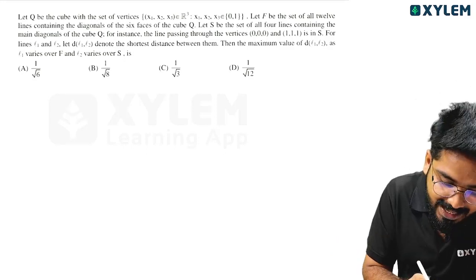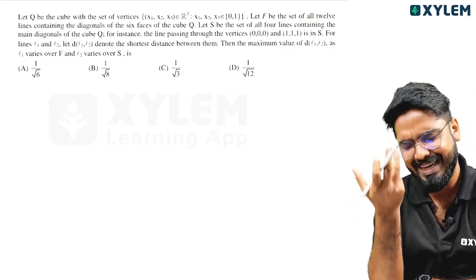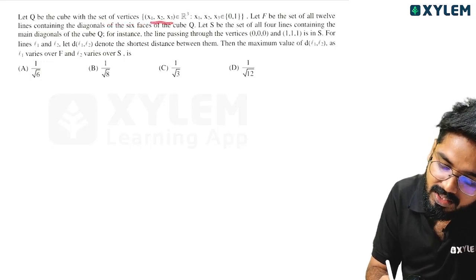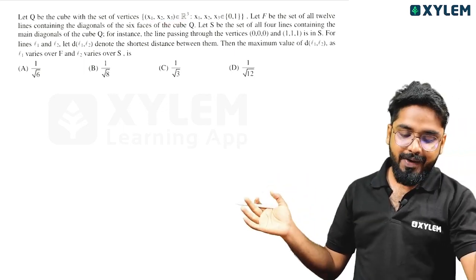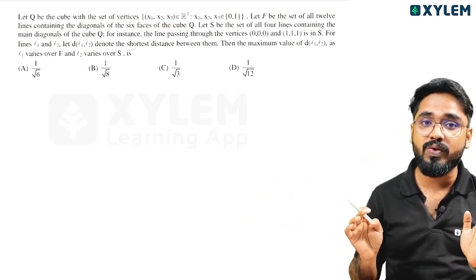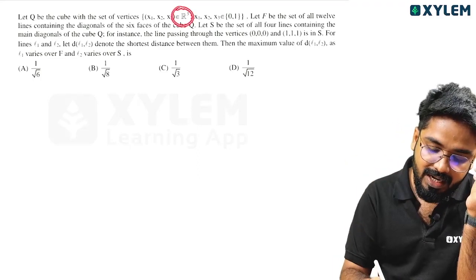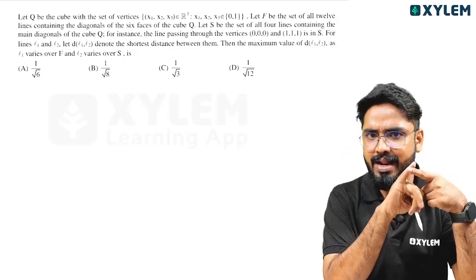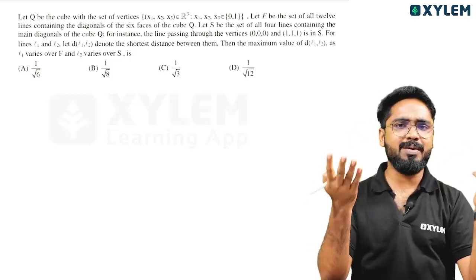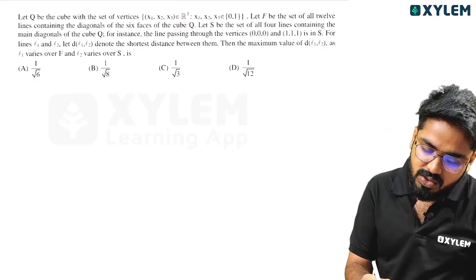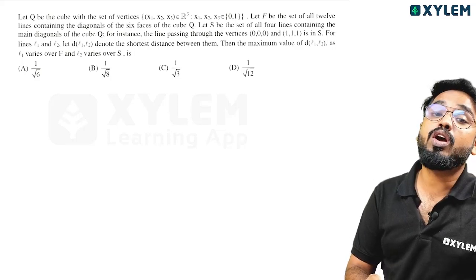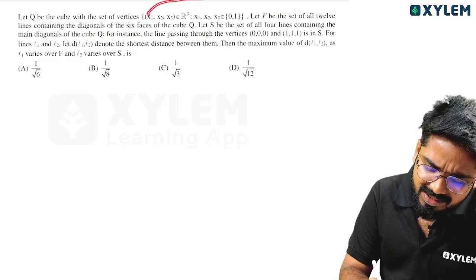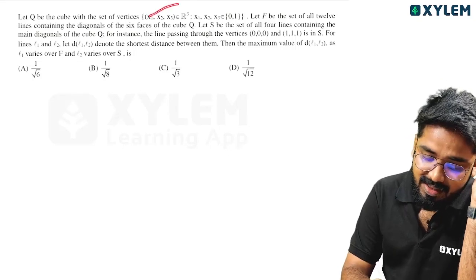Let a cube be a set of vertices (x1, x2, x3) belonging to R³. R is a number line, R² is a 2D plane, R³ is a 3D space. And x1, x2, x3 belong to the set {0, 1}. That means x1, x2, x3 form a cube.